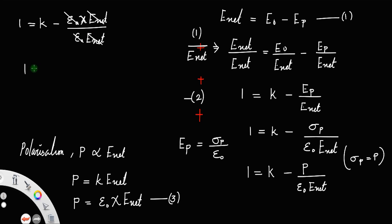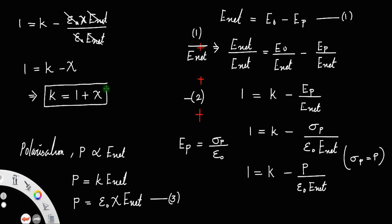Therefore, k = 1 + χ. This is the relationship between the dielectric constant and electric susceptibility. From the equation itself, it is clear that the dielectric constant is always greater than 1.